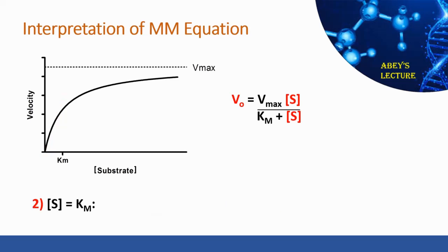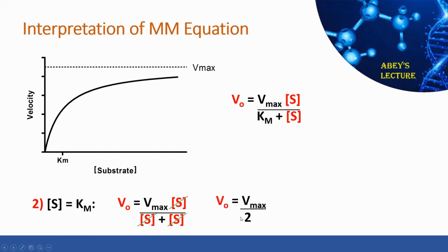Scenario two is when substrate concentration equals Km. Remember that Km is defined as the substrate concentration required to reach 50% of the maximal velocity. Using the Michaelis-Menten equation and substituting [S] in place of Km, since they are equal, the substrate concentration terms cancel, and we get V0 equals Vmax over 2 — confirming that when [S] equals Km, the velocity is 50% of the enzyme's maximal velocity.